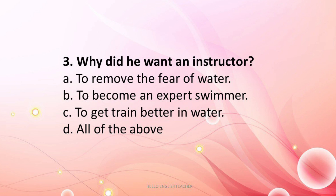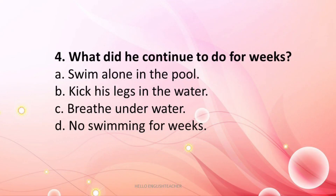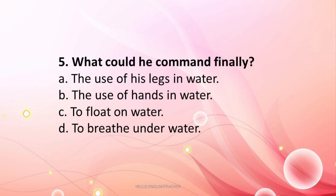Question 3: Why did he want an instructor? The answer is B — to become an expert swimmer so that he could remove the fear of water. Question 4: What did he continue to do for weeks? The answer is B — kick his legs in the water; the instructor was teaching him how to use his legs while swimming. Question 5: What could he command finally? The answer is A — the use of his legs in water, after weeks of training.